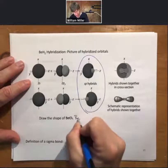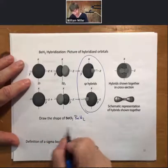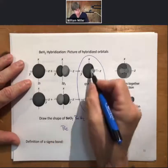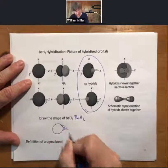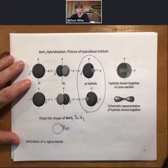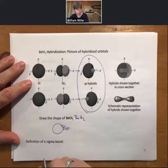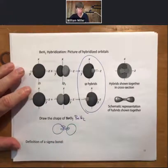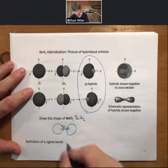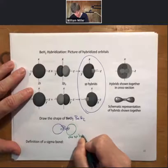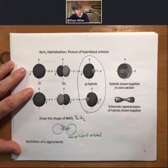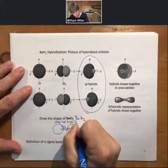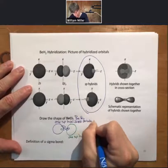For beryllium hydride, we'll have beryllium in the center with two SP hybridized orbitals. On one side there's a big lobe and on the other side a smaller one — that is one SP hybridized orbital. The other one, shown in green, is the second SP hybridized orbital pointing the opposite direction.